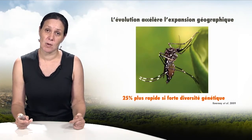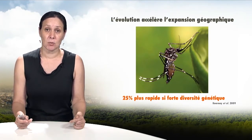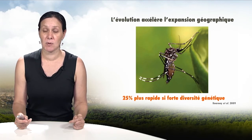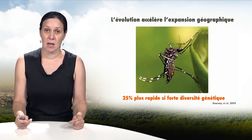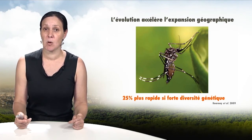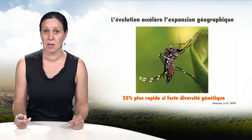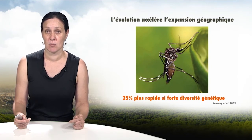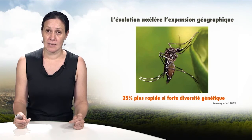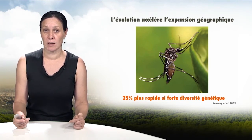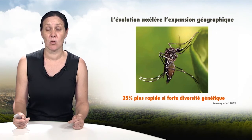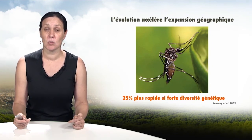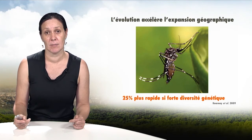Scenarios which factor in genetic evolution of populations are extremely rare. This study modeled the expansion of the tiger mosquito in Australia with various hypotheses about genetic evolution. The authors contrasted one scenario where mosquitoes had no ability to evolve and adapt, against scenarios where the tolerance of mosquito eggs was genetically variable within the species. If genetic diversity is great, the speed of expansion of the mosquito can increase by 25%. This shows that our ignorance of genetic diversity is a source of major uncertainty as to the future of biodiversity.